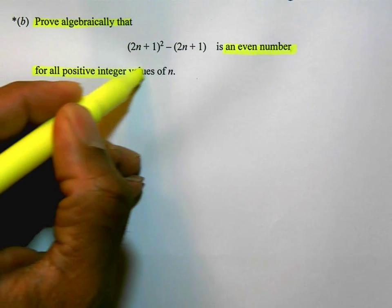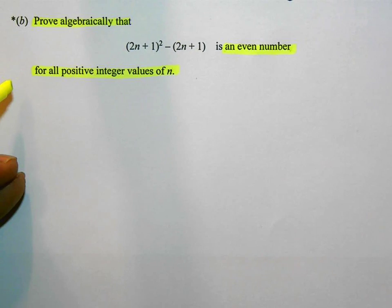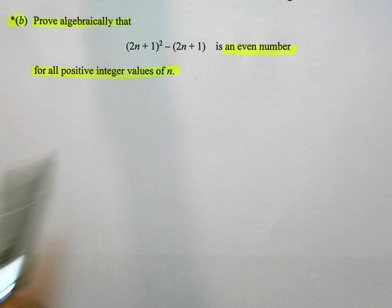The question has a star next to it, so there's marks for quality of written communication. So these proof questions, you should be familiar with these if you've done your proof work and you've studied this.